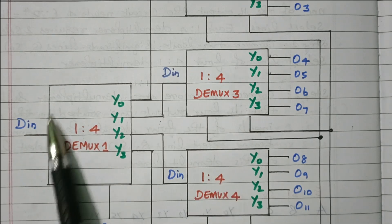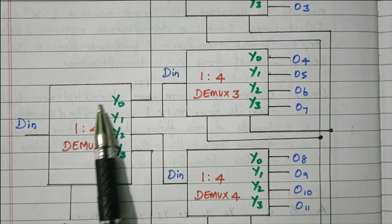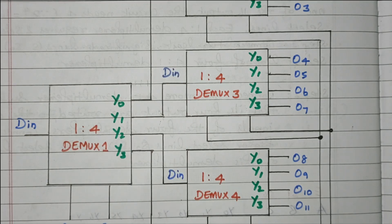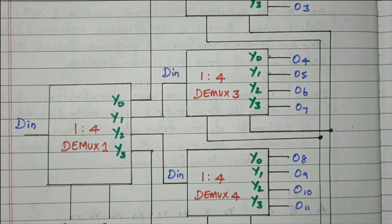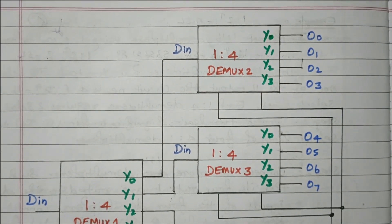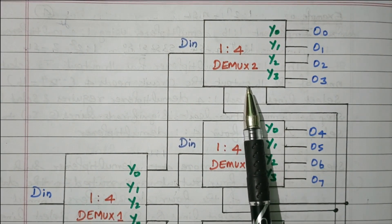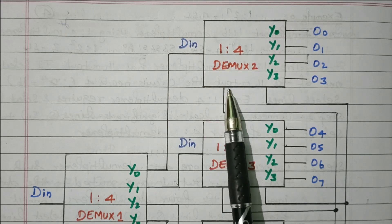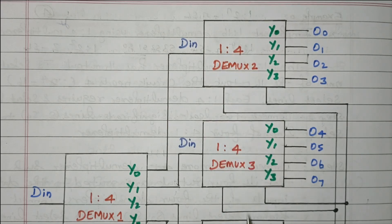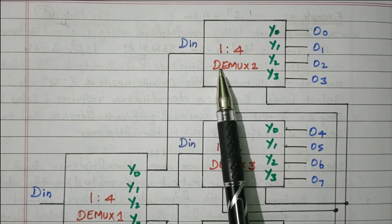These 4 demultiplexers are controlled by DMUX1 with one data input. The data will be given to any one of these demultiplexers based on the selection line. Now we'll see the control of each demultiplexer one by one. This is DMUX2. When the MSB selection line S3 and S2 is 00, DMUX2 will be enabled, and the remaining demultiplexers are disabled, so it receives the input.